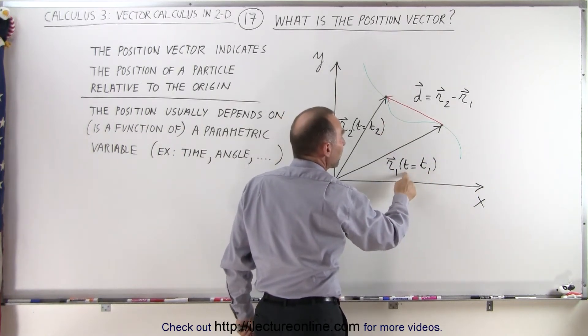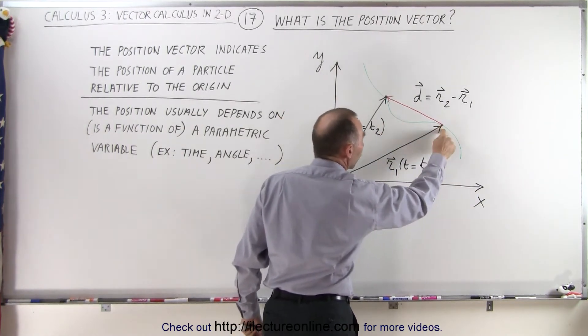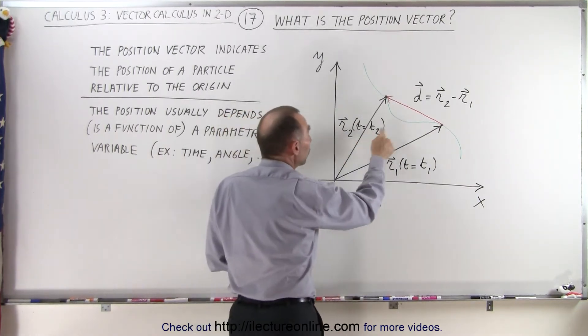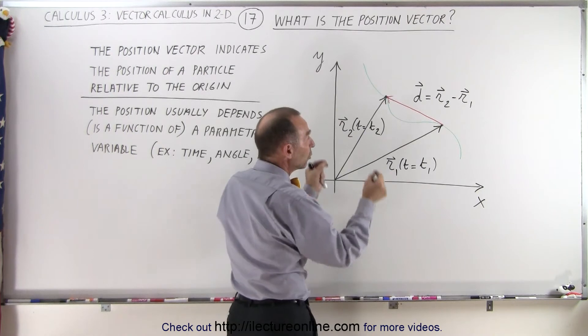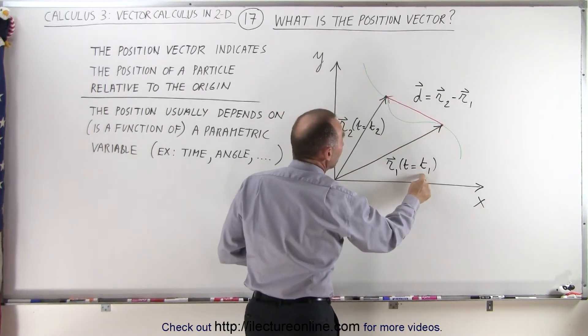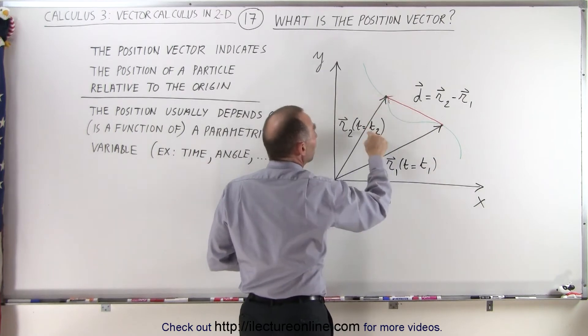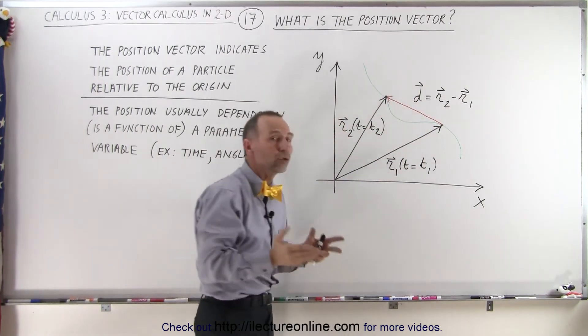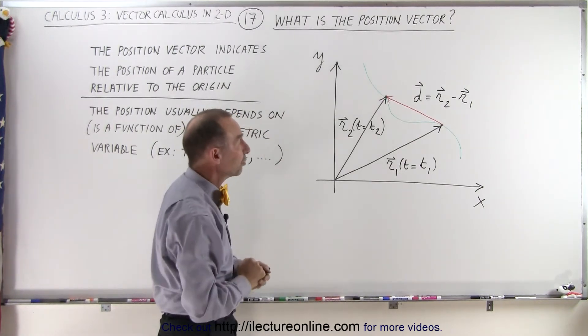At some point in time, when time is equal to t1, the particle is over there. At some later time, when time is equal to t2, the particle is at a different location. And so the displacement from where it was here at time equals to t1, and where it's over here at time equals to t2, that displacement is simply the difference between those two, well, what we call position vectors.